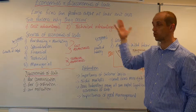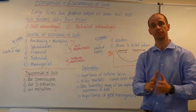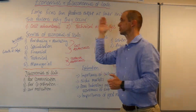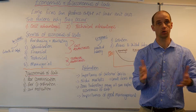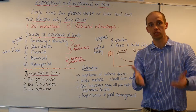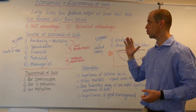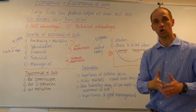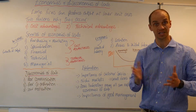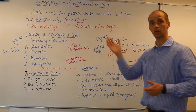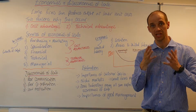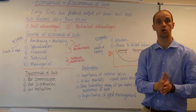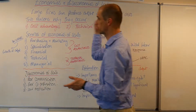Let's take a look at economies and diseconomies of scale. Economies of scale refer to the fact that large firms can produce output at lower unit costs than smaller firms. Generally speaking, there are two clear reasons why economies of scale are likely to occur: cost advantages that a large firm can generate against a smaller firm, and technical expertise-based advantages that can also be generated by a larger firm.